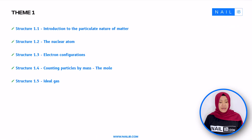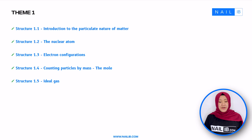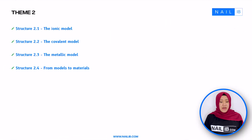Let's go back to Theme 1, which is divided into five different topics. It covers the structure of matter, atomic particles, and electron configuration, counting particles by mass, and understanding the behavior of gases and the ideal gas model. The second theme focuses on the types of bonds — ionic, covalent, and metallic — that influence the properties of materials.